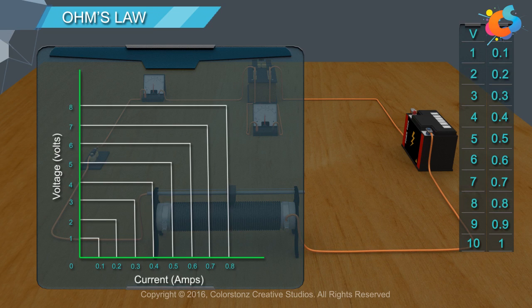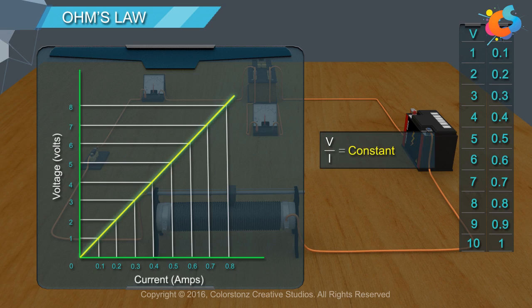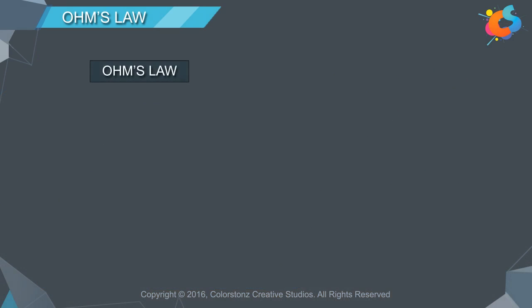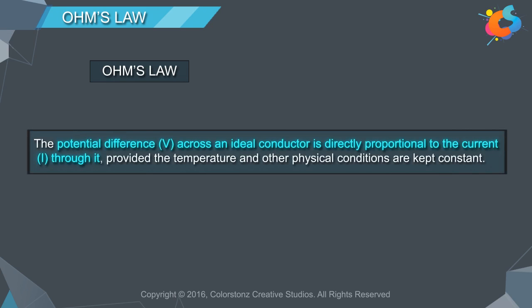We can see that the points form a straight line passing from the origin, indicating a linear relationship between current and voltage. The ratio of the applied voltage V and current I is constant for each case. This constant is the resistance offered by the resistance box, which is equal to the slope of the straight line in the graph. Thus, Ohm's Law can be stated as the potential difference V across an ideal conductor is directly proportional to the current I through it, provided the temperature and other physical conditions are kept constant.